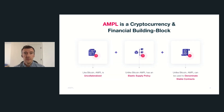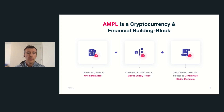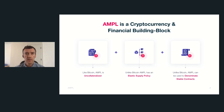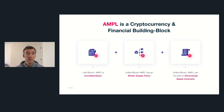Ample is a cryptocurrency, like Bitcoin, and we also call it a financial building block. Like Bitcoin, it is uncollateralized, meaning it has the same high scalability that Bitcoin does — it's not held back by having to be collateralized by any outside asset. But unlike Bitcoin, it has an elastic supply policy, meaning the supply of Ample can adjust every day.